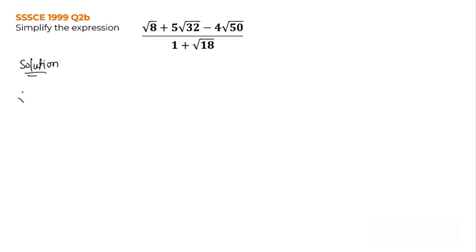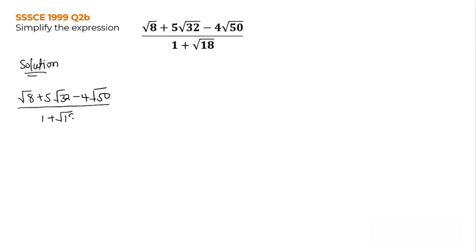So we have root 8 plus 5 root 32 minus 4 root 50, all over 1 plus root 18.